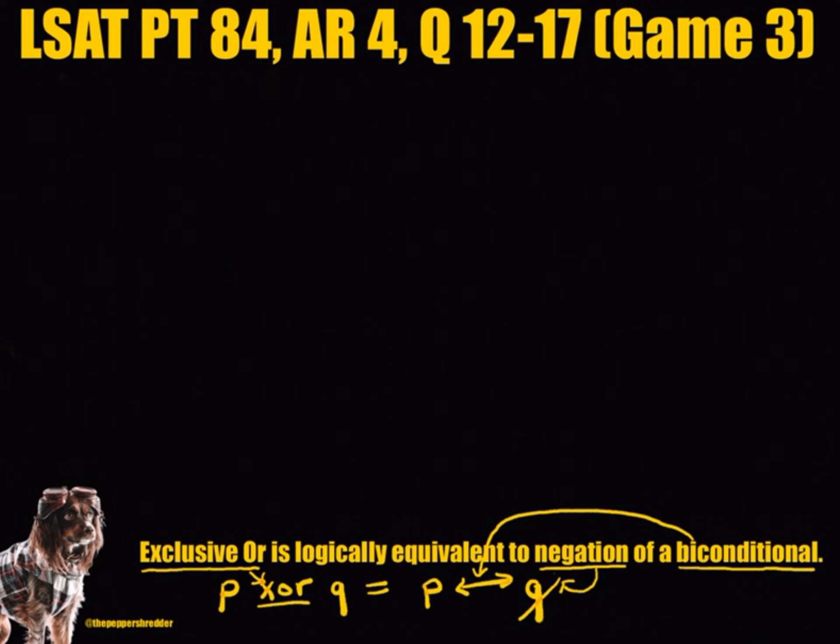Game 3 is an in and out and grouping game. There are 6 actors: F, G, H, J, K, and L.